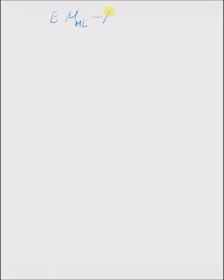The first property is that the maximum likelihood estimate of the mean is an unbiased estimate of the mean — that is, the expected value of μ_ml minus the real μ, which is the real mean, is 0.